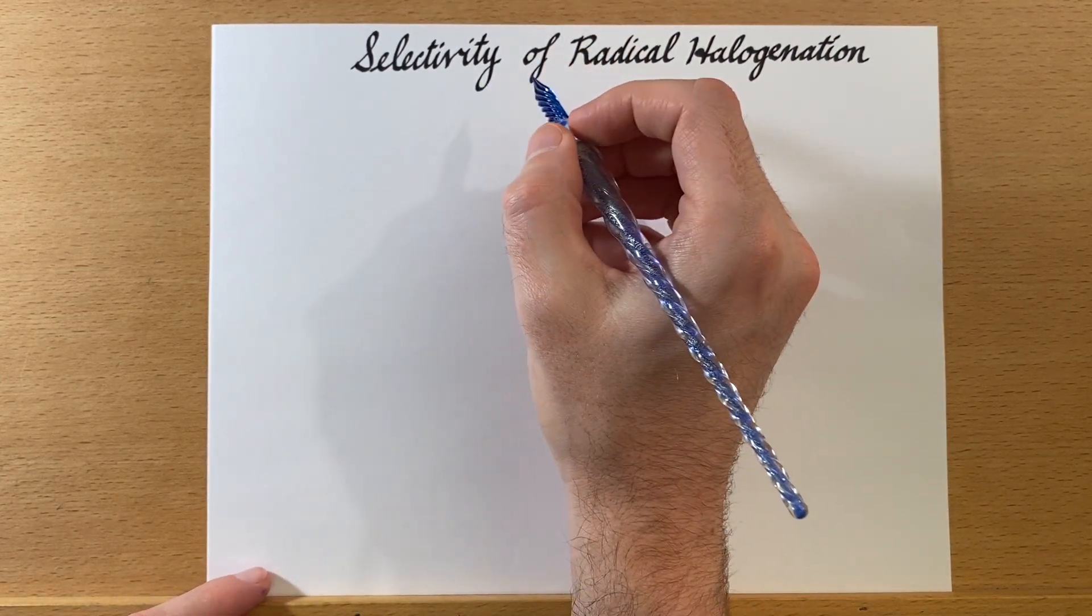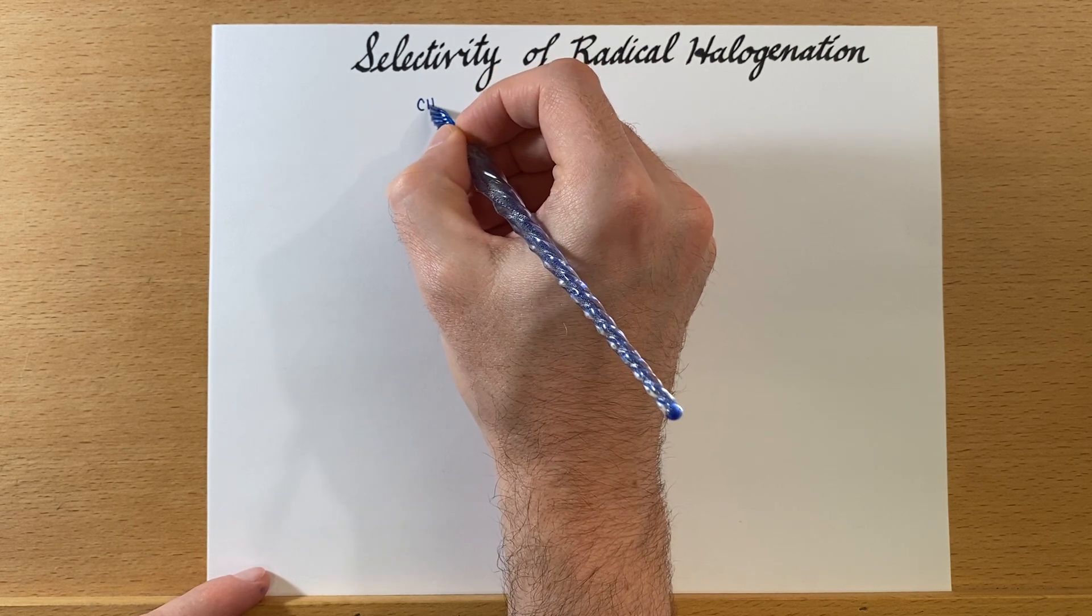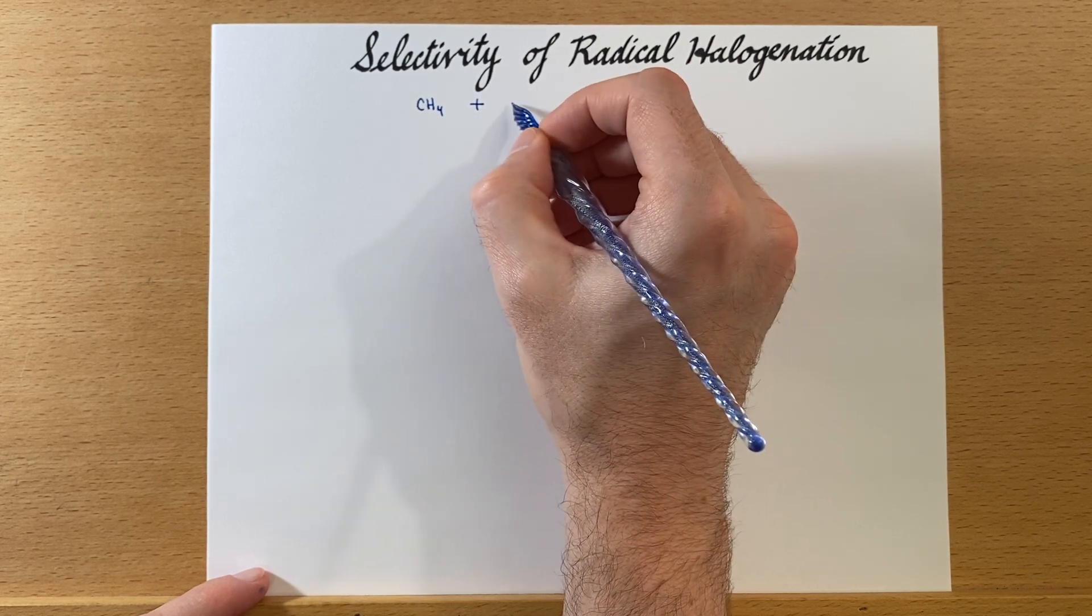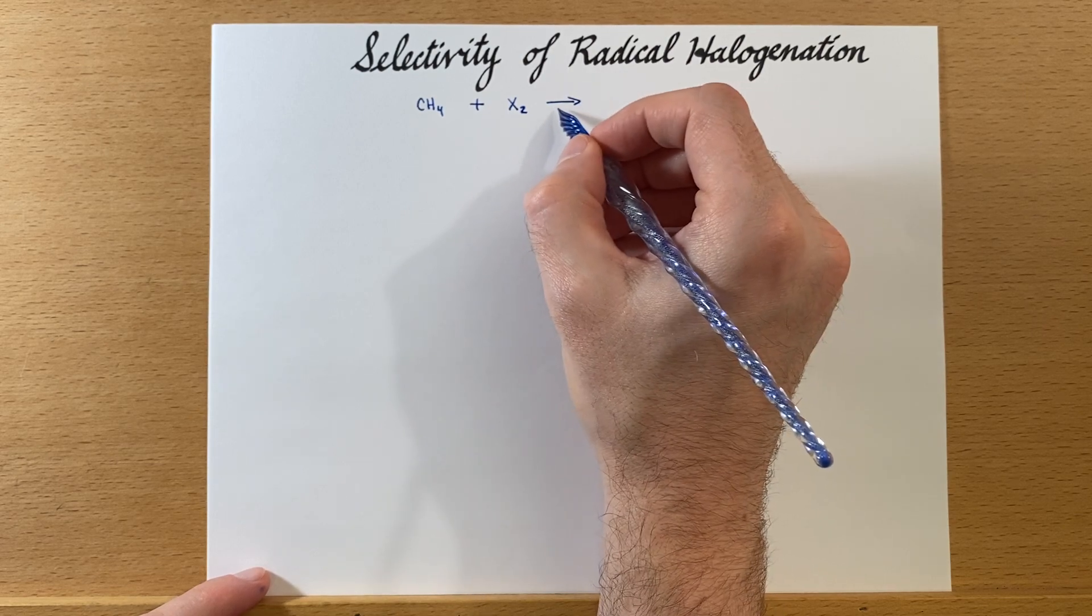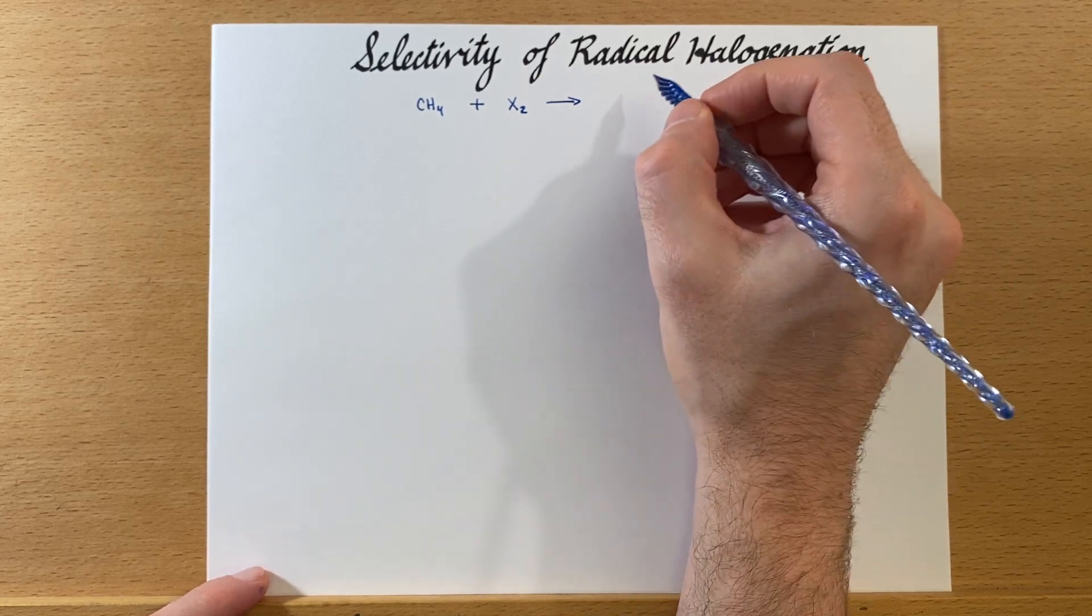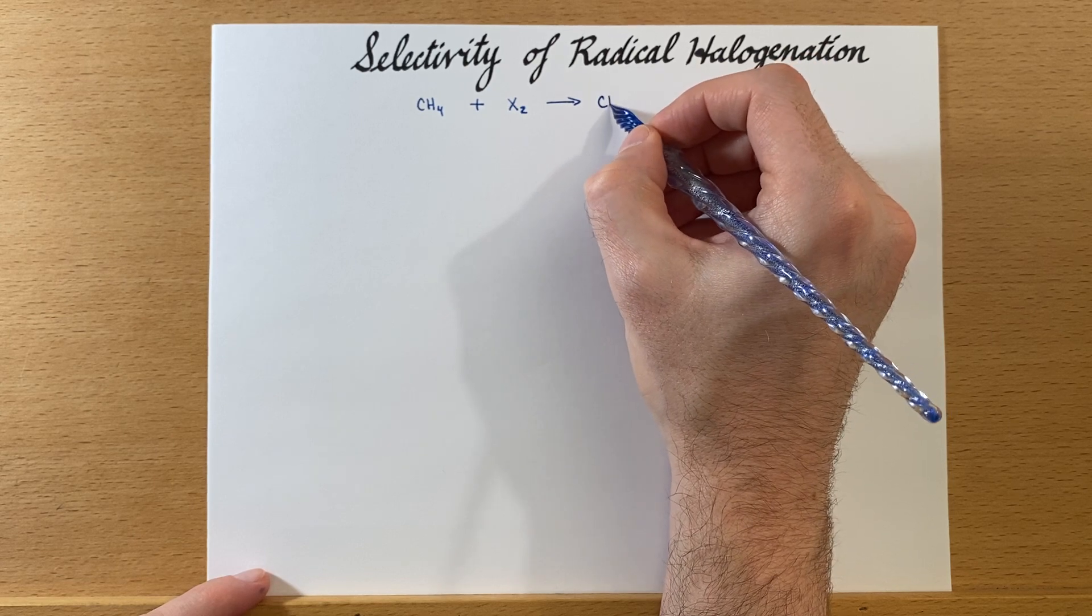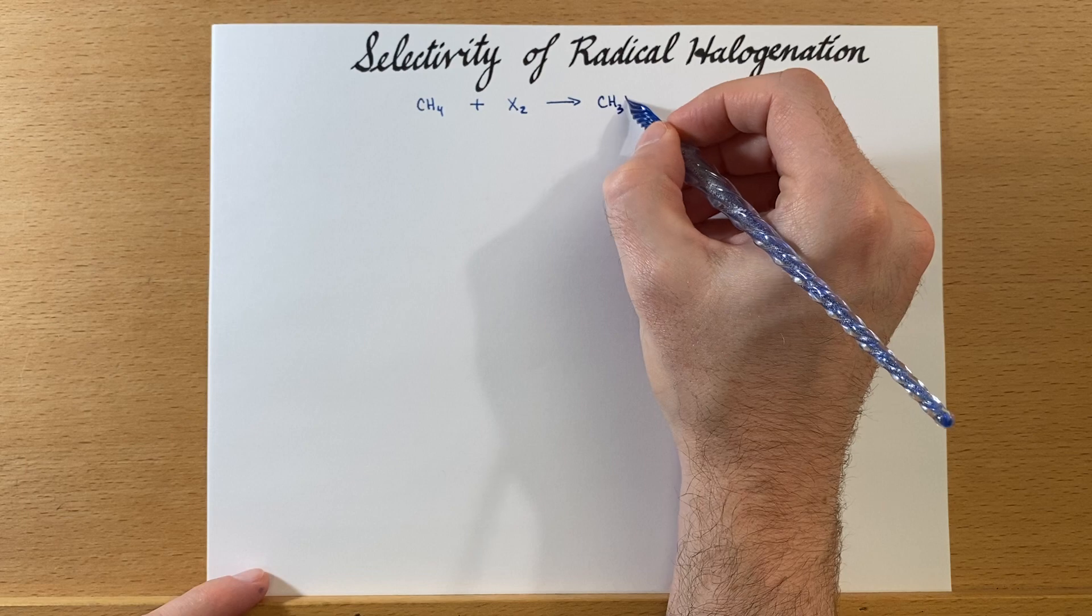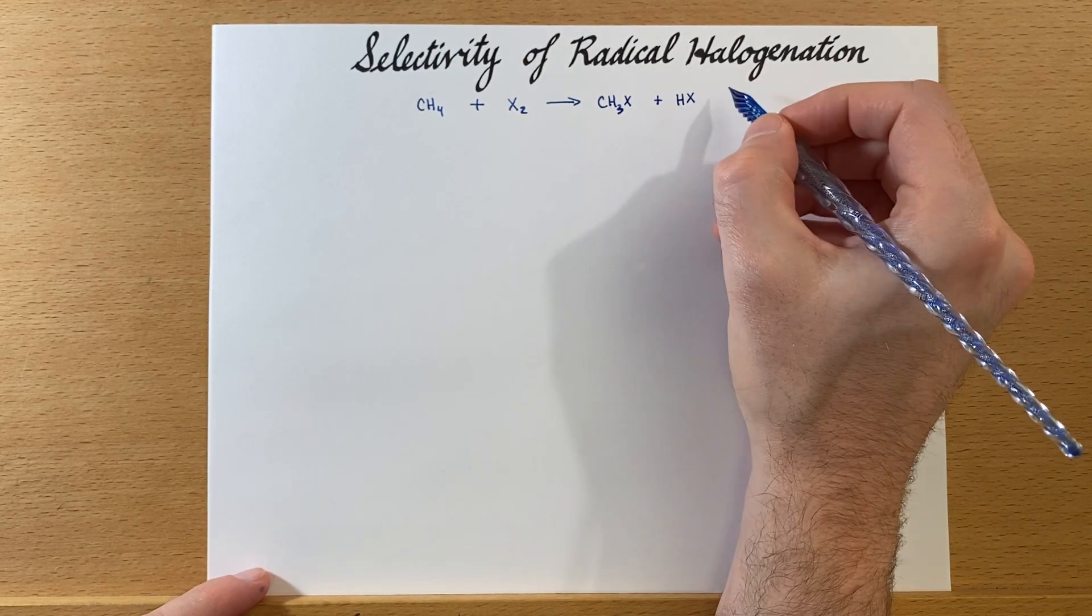Let's examine a generic reaction. We have methane, and we're going to add some halogen to it. We'll probably add some kind of light here to get the reaction going, and we should generate the halogenated version plus the acid.